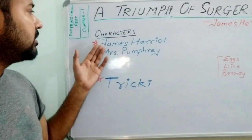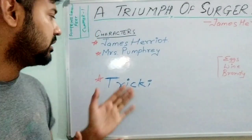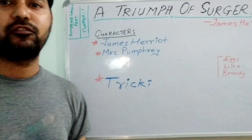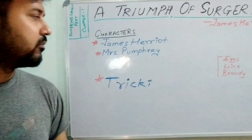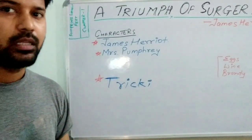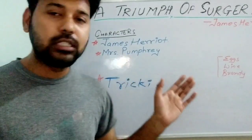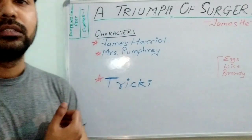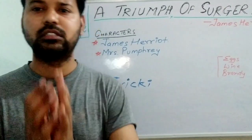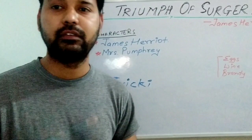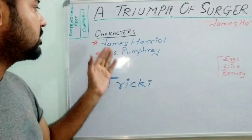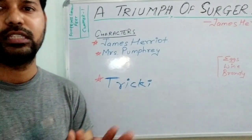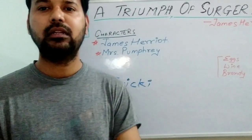James Herriot rushed to Mrs. Pumphrey's house. After seeing Tricky, he immediately said that Tricky must be admitted to his veterinary hospital for a fortnight — that is, for 14 days — and that would cure him. Emotionally, Mrs. Pumphrey allowed him to take the dog. While James Herriot was taking Tricky away, Mrs. Pumphrey loaded lots of toys and foods into the car so Tricky could have a leisurely life even in the hospital, but Herriot stopped her and advised that it was exactly these things that had made the dog so fat.